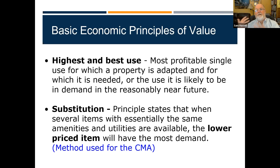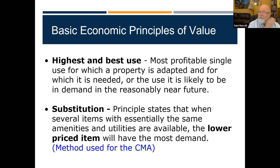Crown molding is a good example: some sellers put a $25,000 value on it, but I can install it for $10 a foot. If I can save $25,000 by going down the street without crown molding, that's what I'll do — unless there's a significant time difference. You have to price the house properly, otherwise it won't sell, or it'll sell much later than comparable homes.